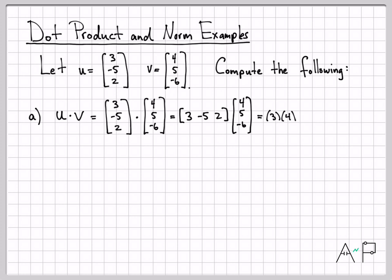So we have 3 times 4 plus a negative 5 times 5 plus 2 times a negative 6. 3 times 4 is 12 minus 25 minus 12. And we get a negative 25 for that dot product.